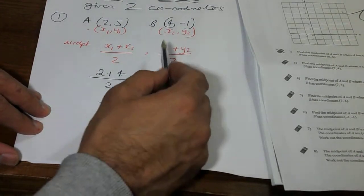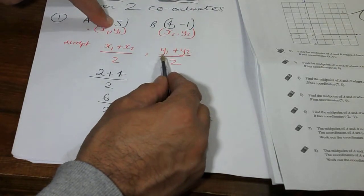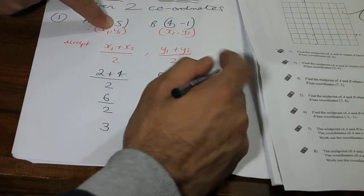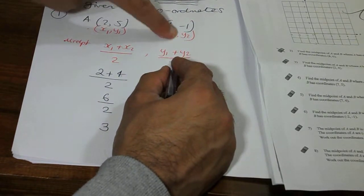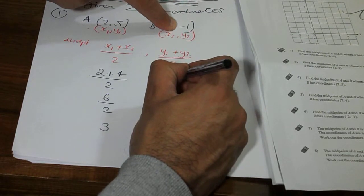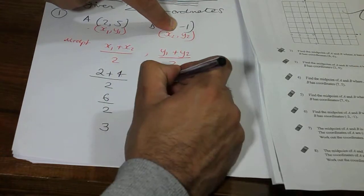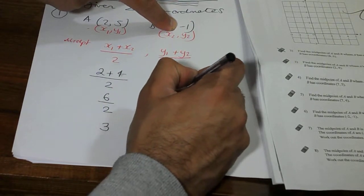Okay, now we're over here. So we're going to work out Y1. Y1 is 5. And we're going to add the Y2 value. The Y2 value is minus 1. Okay, we're going to add the minus 1. And then we're going to divide it by 2.